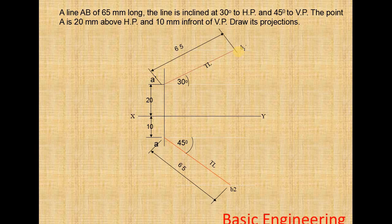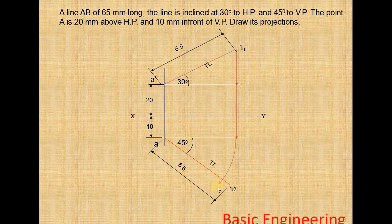From B1', draw a vertical line down to the A locus line. Then, with A as center and the distance from A to this intersection point as radius, draw an arc from this point to the B2 locus line. Name the intersection point as B. Now join A to B — this is our required top view.